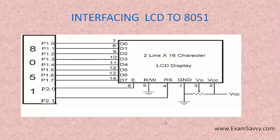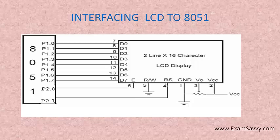Now, how is the LCD interfaced with the 8051? Data pins 7 to 14 are interfaced with port 1 of the 8051 microcontroller, from port 1.0 to port 1.7. So these 8 data pins are connected to port 1 entirely. Enable is connected to port 2.0, read/write is grounded, and register select is connected to another pin of port 2. This is how an LCD is interfaced with 8051.